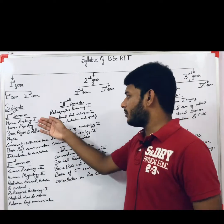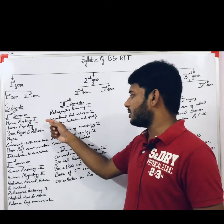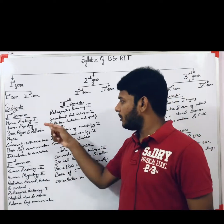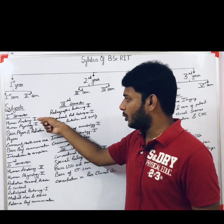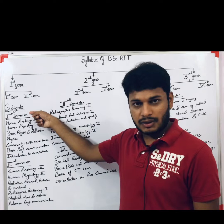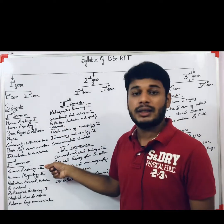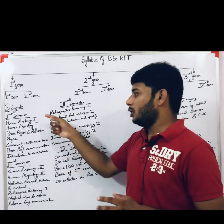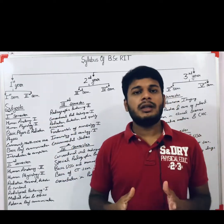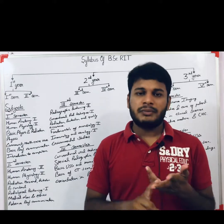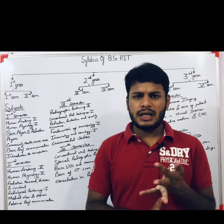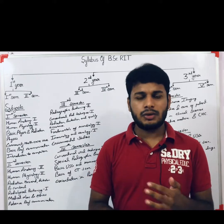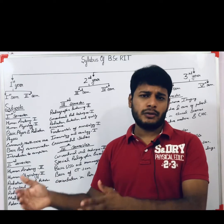In the first semester you will have six subjects. The first one is Human Anatomy Part 1, and Human Anatomy Part 2 will be in the second semester. In human anatomy they will teach you about cadaveric anatomy, cytology, histology, and genetics. This can differ from university to university.